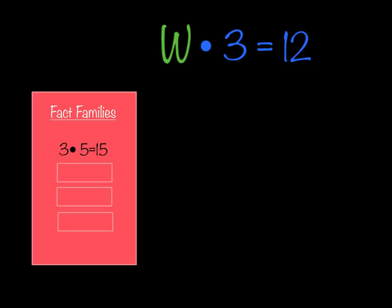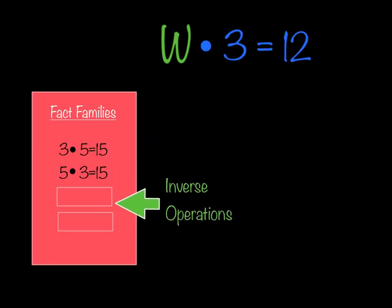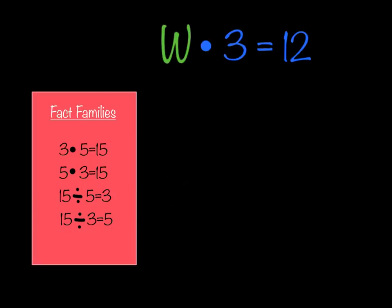Now we're going to move on to some multiplication and division options, still using the fact family. This dot represents multiplication — the reason we use it is because we used to use an x, but when we're using variables, it's hard to tell whether x represents multiplication or a variable. You may also see this written as 3w equals 12 or w3 equals 12, because a number next to a variable also represents multiplication.